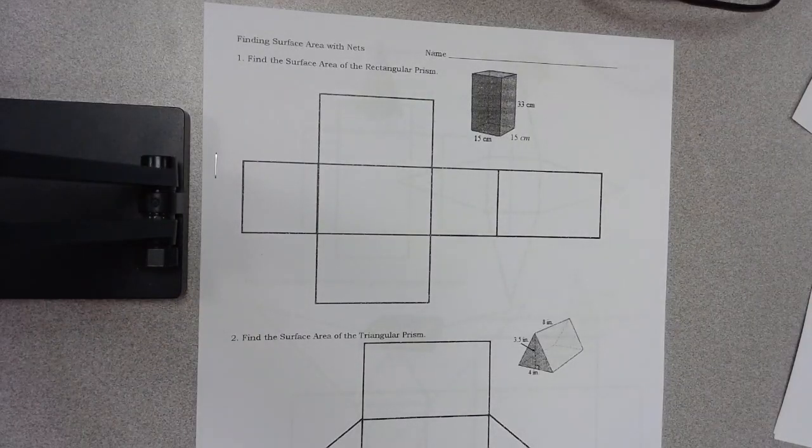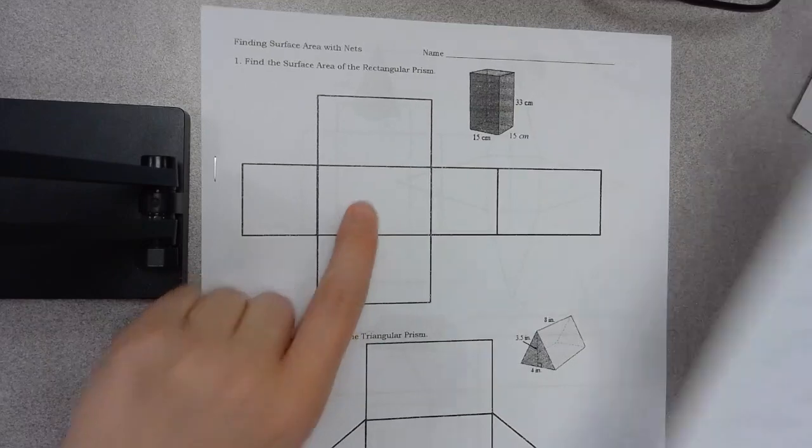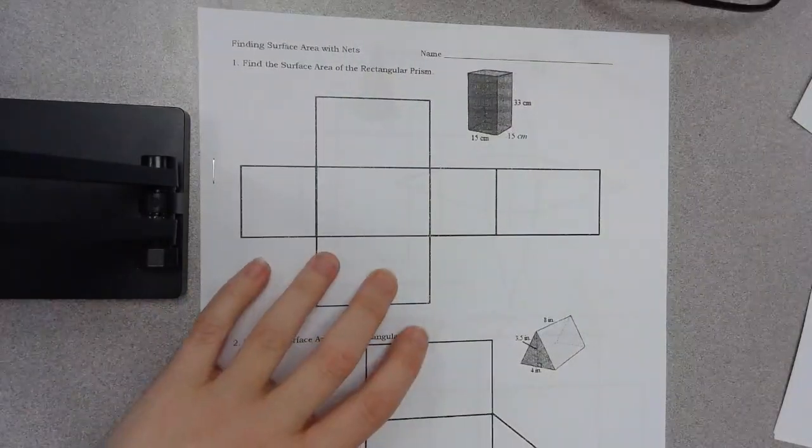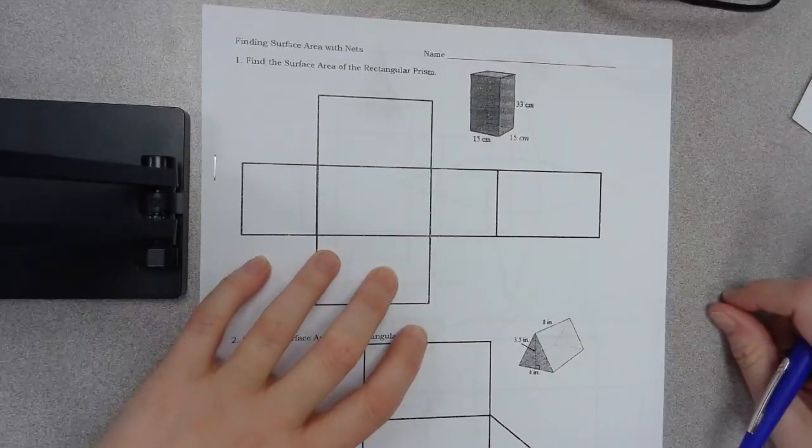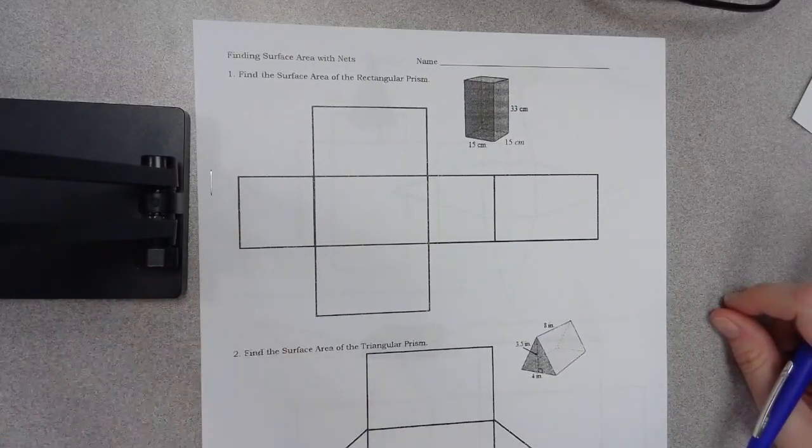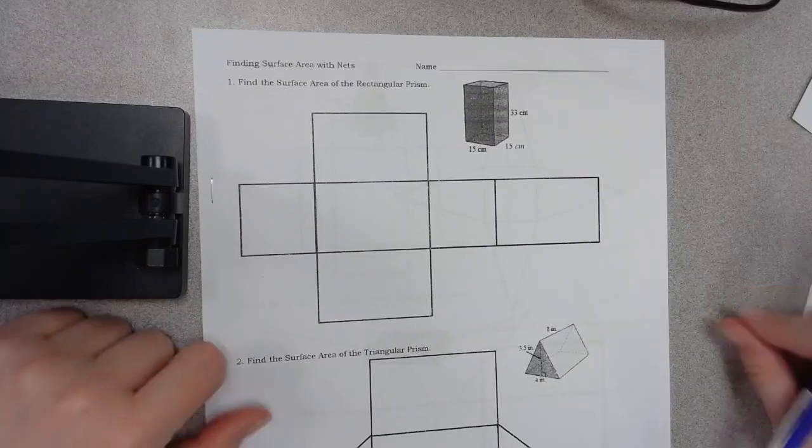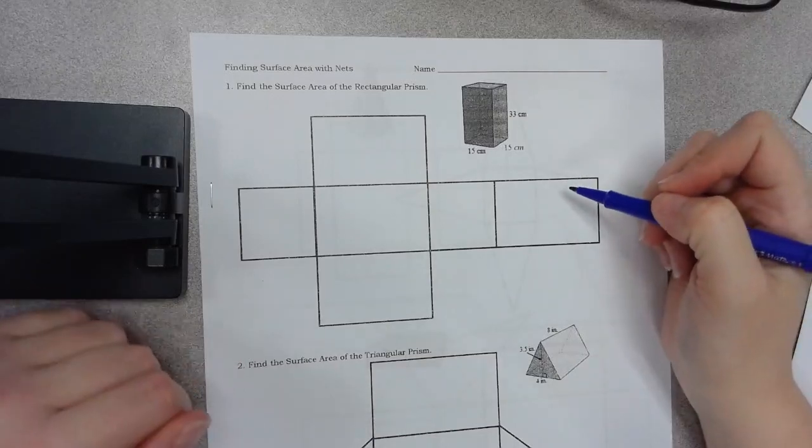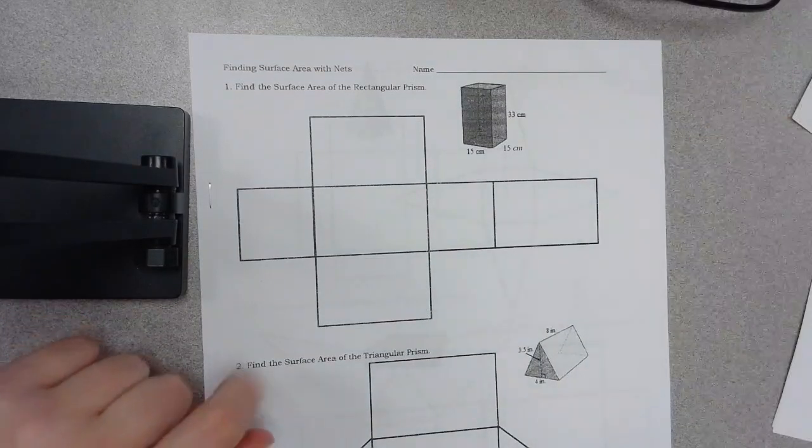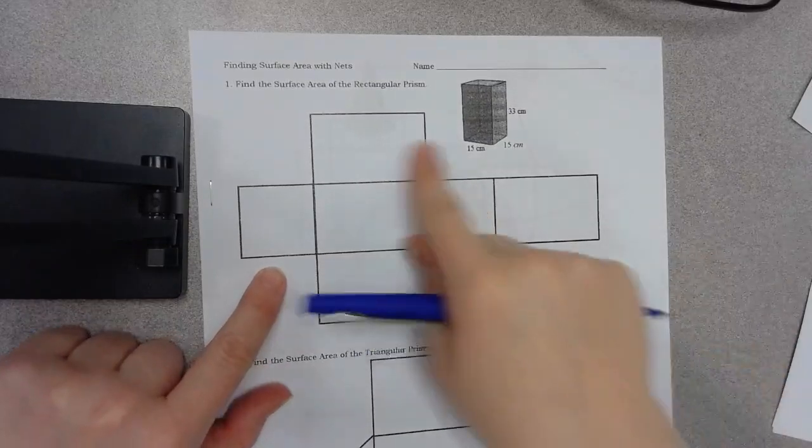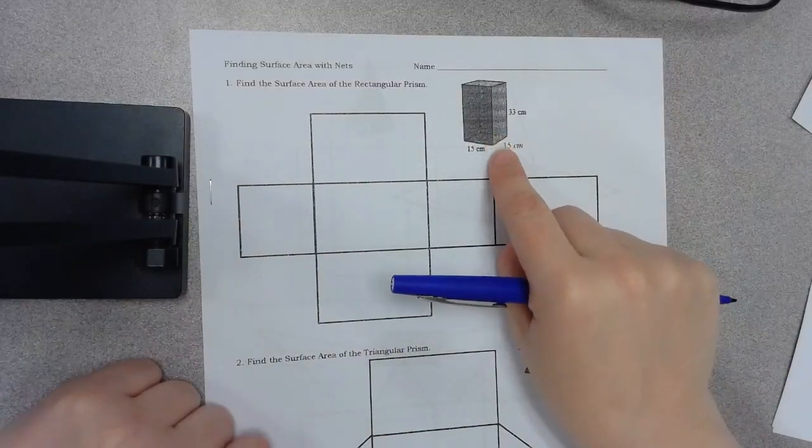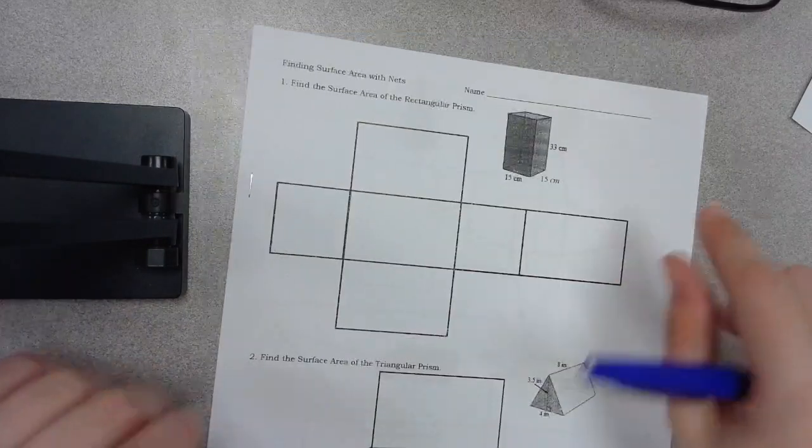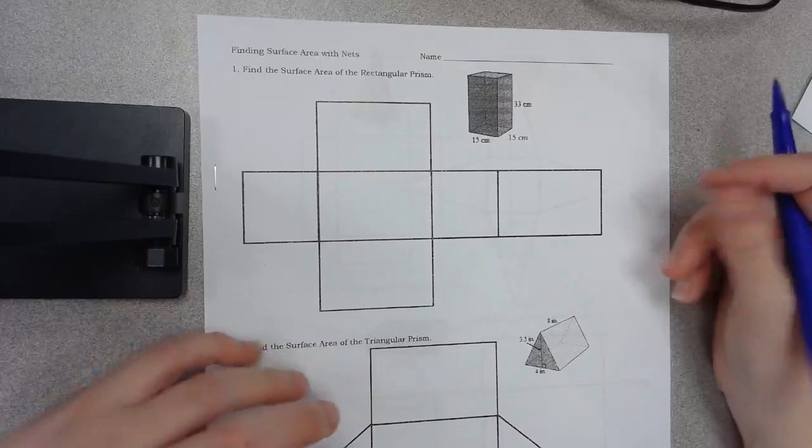Okay guys, so for math today your teacher should have given you this sheet and this one. You can put this one off to the side. We're going to do this one together and it's like a lesson that we would do together if I were here. So you need to have this one in front of you and I need you to be writing along with me because in the end you are going to turn this in and that's how I'll know if you did the lesson with me. So take a look at this shape. This is a net of this rectangular prism and what we're going to do is figure out the area of each of these boxes and then add them up because remember that's how you find the surface area.